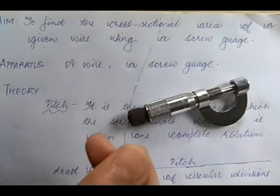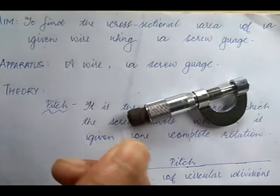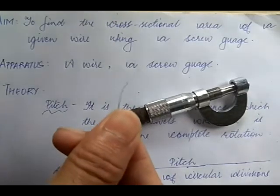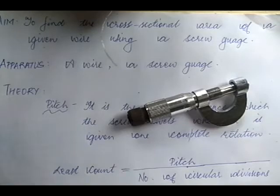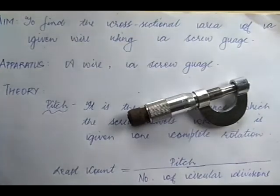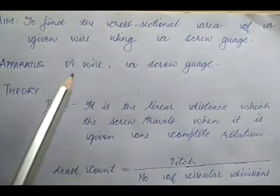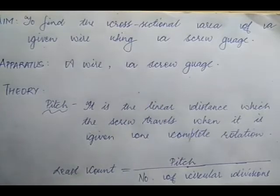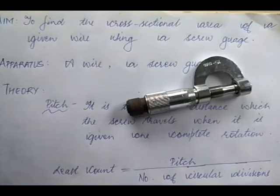This is the wire — notice how fine and small it is. We want to measure the radius of this wire, which we cannot do using a ruler or scale because it is much smaller than a millimeter. The apparatus needed are the wire and the screw gauge. The first thing to do when using this instrument is to find its least count.